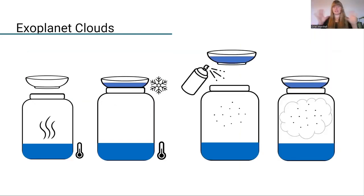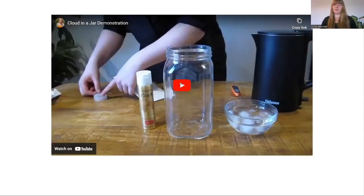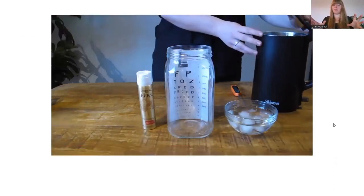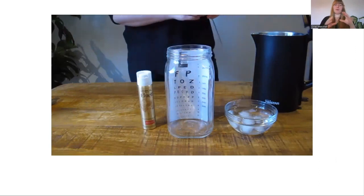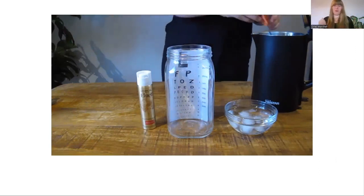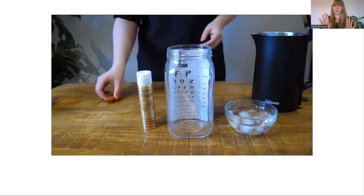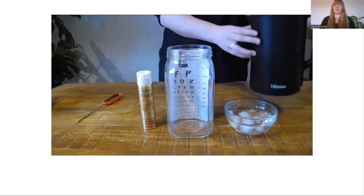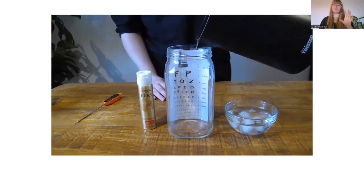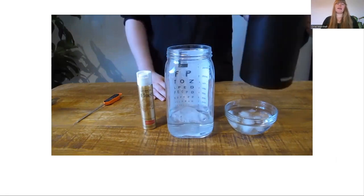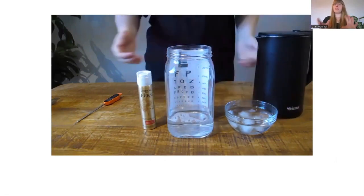The first activity is the cloud experiment, using fairly affordable materials. In the background you can see the demonstration that's part of the lesson plan. We have a jar, hairspray, ice, water, and a thermometer. An eye chart is taped to the back of the jar so you can see the cloud forming — you can observe how readable the chart is before and after. We use water that's as hot as possible before steaming, around the high 80s degrees.